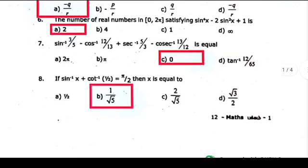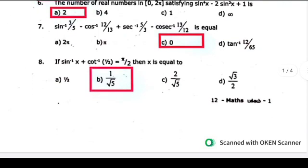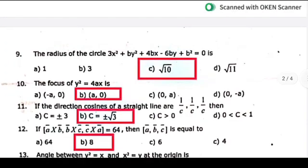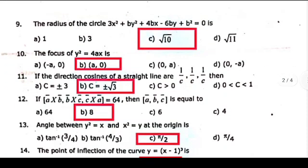Seventh, option C, zero. Eighth, option B, one by two. Ninth, option C, root N. Tenth, option B, A, 0.